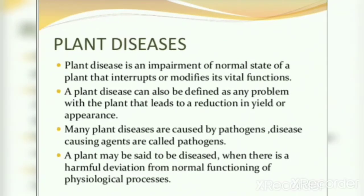What is plant disease? Plant disease is an impairment of the normal state of a plant that interrupts or modifies its vital functions. If a plant remains in a normal state and there are any changes in that normal state, changes occur in vital functions. A plant disease can also be defined as any problem with the plant that leads to a reduction in yield and appearance.